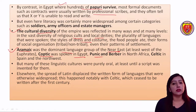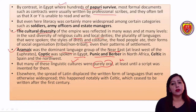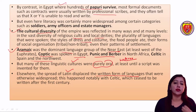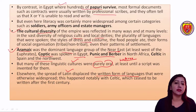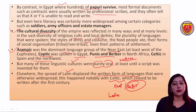Coptic was spoken in Egypt, Punic and Berber in North Africa, and Celtic in Spain and the northwest. There was a lot of diversity in languages. However, these linguistic cultures were purely oral — there was no script; people only spoke these languages and did not write them. The spread of Latin displaced these oral languages in their written form. When the Latin written form came, it replaced languages like Celtic, which had been oral.